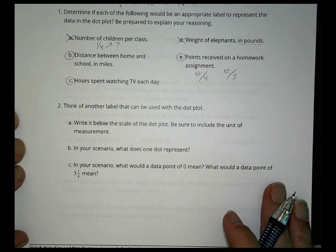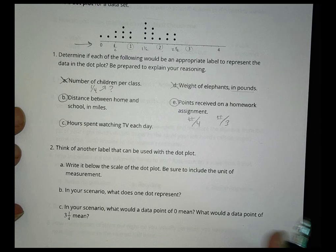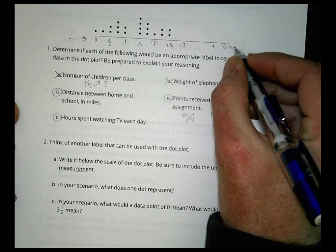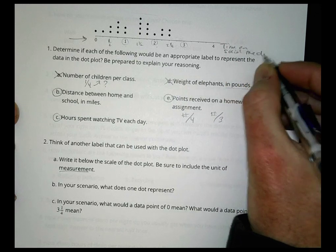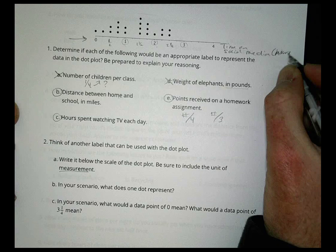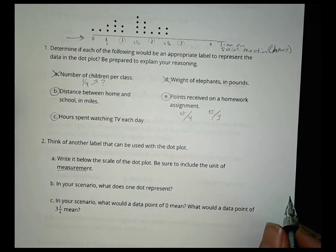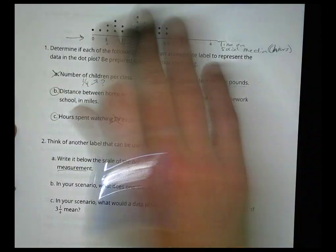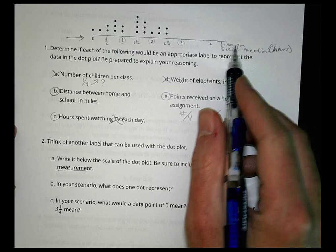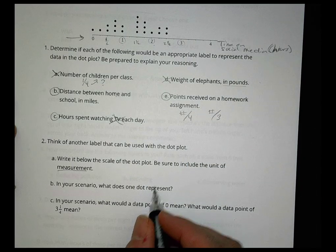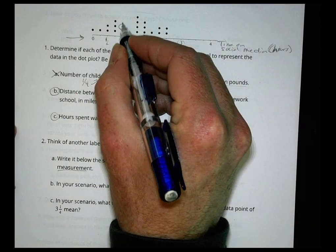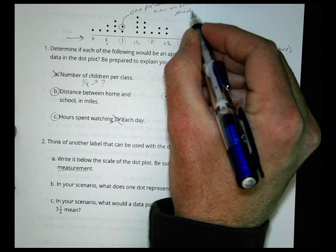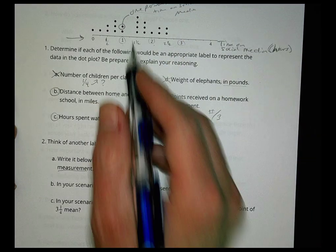Think of another label that can be used with the same dot plot. Write it below the scale and be sure to include the unit of measurement. So what I would probably do here is maybe something like time on social media - let's do hours, because you kids are on that a whole lot. So maybe time on social media. That's usually not what kids are on these days - you're on your Instagram and Snapchat, TikTok videos. So that might be a thing that you could measure there.